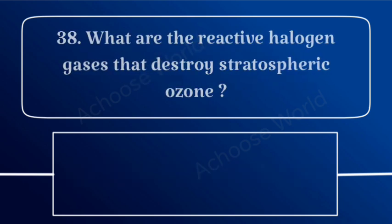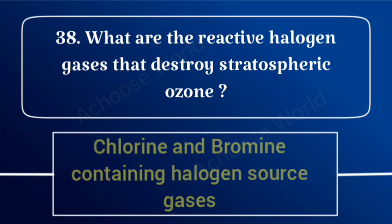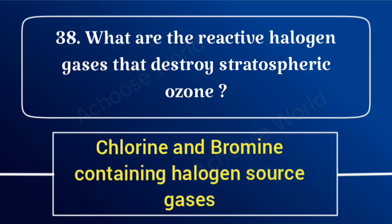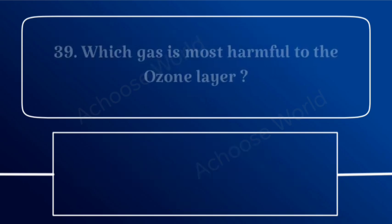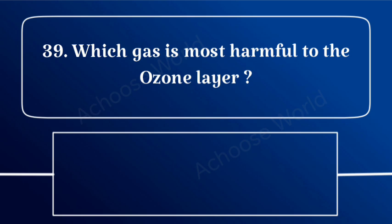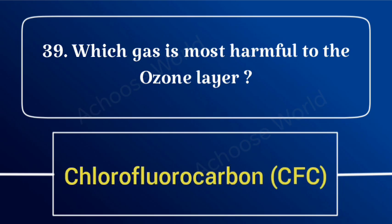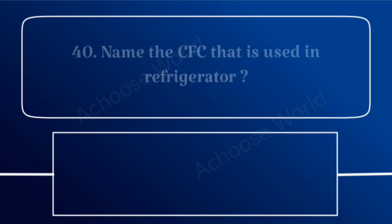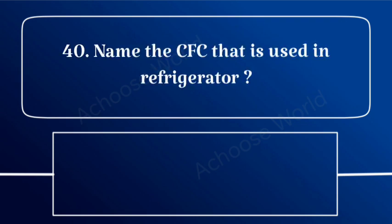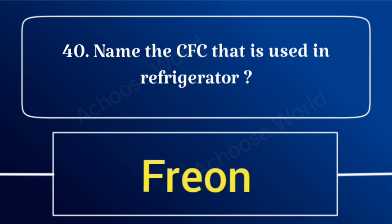What are the reactive halogen gases that destroy stratospheric ozone? Chlorine and bromine containing halogen source gases. Which gas is most harmful to the ozone layer? Chlorofluorocarbon, CFC. Name the CFC used in refrigerators. Freon.